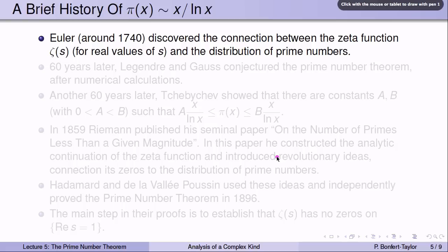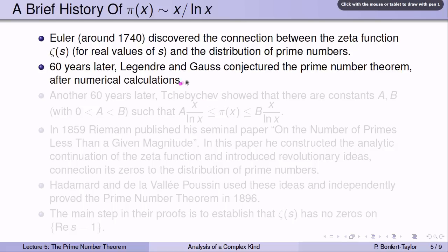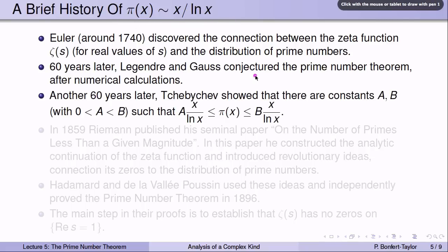Here is a brief history of the prime number theorem and its proof. Euler was the first to discover the connection between the zeta function ζ(s), for real values of s, and the distribution of prime numbers. About 60 years after Euler, Legendre and Gauss conjectured the prime number theorem after numerical calculations led them to believe it should be true. Another 60 years later, Chebyshev showed that there are constants a and b such that π(x) is bounded above by b·x/ln(x) and bounded below by a·x/ln(x) — a step closer to the prime number theorem, though not the theorem itself.